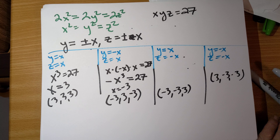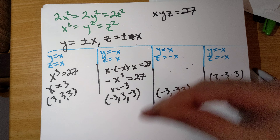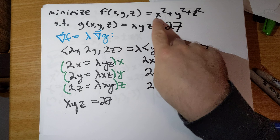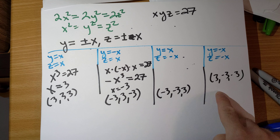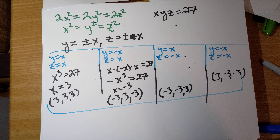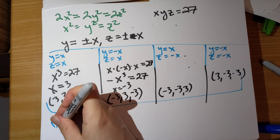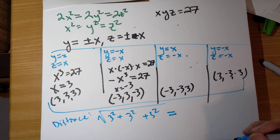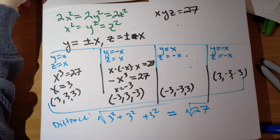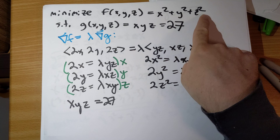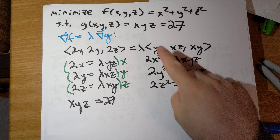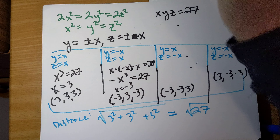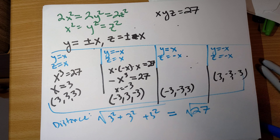From this, solutions arise by writing y and z in terms of x. y is either equal to x or negative x, and z is also either equal to x or negative x. Let's make a little chart of the four cases. If y = x and z = x, then xyz = x·x·x = x³ = 27, which gives x = 3. So the point is (3, 3, 3).